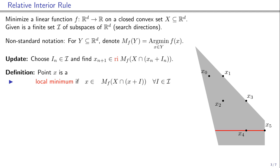Points like f_5 have a stronger property. We call them interior local minima.